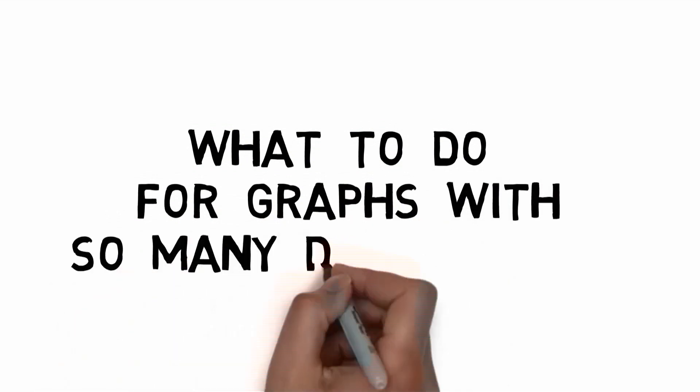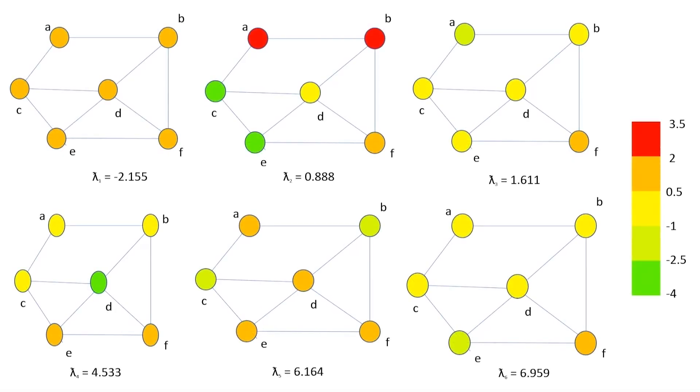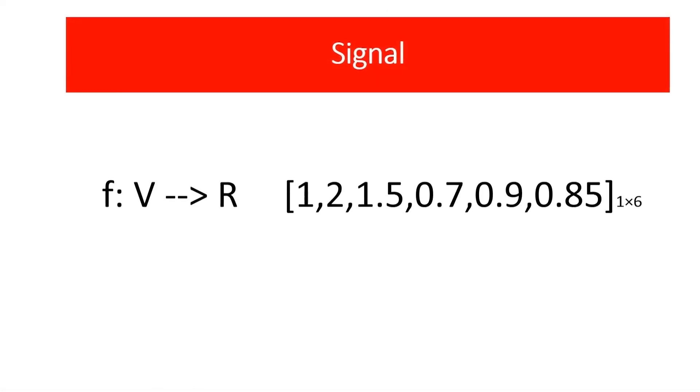But consider a graph with 100s and 1000s of sensing points. They're better to use color code system for representation. Now let's consider a signal and represent it in matrix format. Now we have both, signal and graph, so we shall get into a Fourier transform.